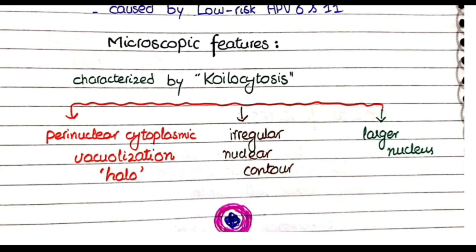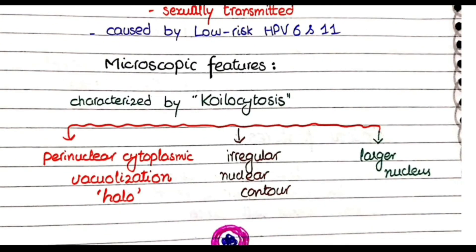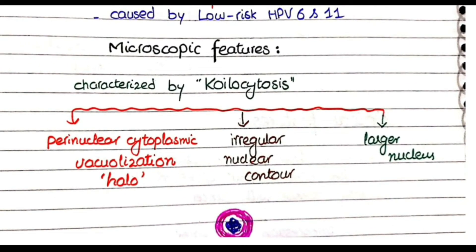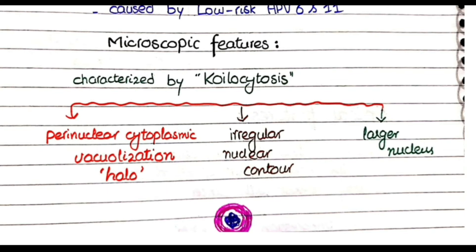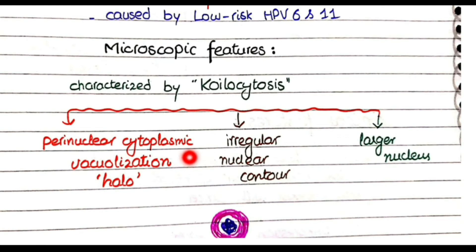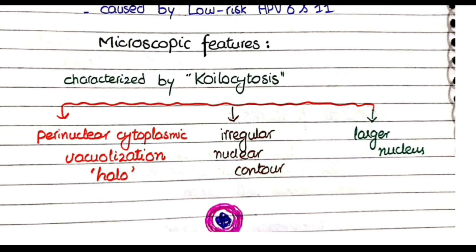An important point concerns the microscopic features of condyloma acuminata. Whenever a cell is infected by human papilloma virus, the cytological change is known as koilocytosis. Koilocytosis is the cytological abnormality that develops in cells infected with HPV, and it is characterized by three features. The first is perinuclear cytoplasmic vacuolization, which appears as a halo around the nucleus — you can see in the diagram a clear zone outside the nucleus due to these vacuoles.